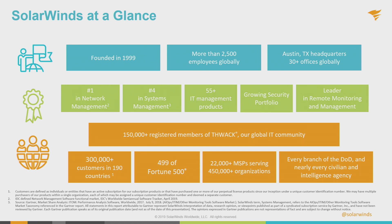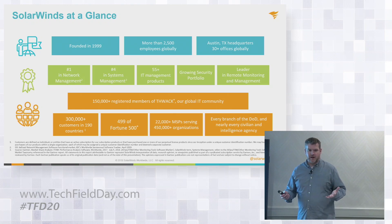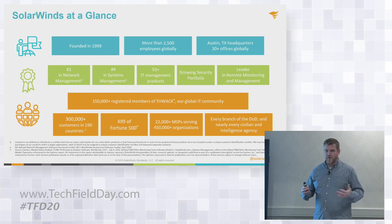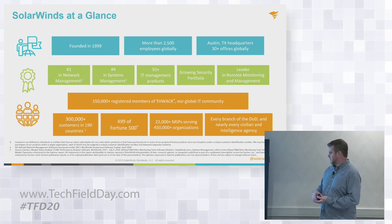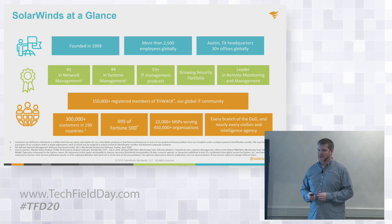We've got about 2,500 employees globally. We're very well known in the network management space, and increasingly known in areas like systems management and IT management. We also have a whole suite of tools around DevOps and modern application monitoring. Steven talked about our THWACK community — very vibrant, with over 150,000 and growing users every day. We have a very broad set of customers across the world — about 499 of the Fortune 500. We nearly had the 500th, but then Fortune decided to change their characteristics.